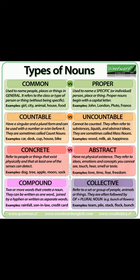Compound Nouns. Compound nouns are two or more words that create a noun. They can be one word — for example, rainfall — joined by a hyphen, or separate words, such as water tank. The main stress is normally on the first part of the compound word, for example: bedroom, washing machine.